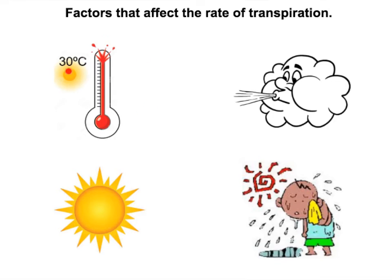Warmer temperatures increase the kinetic energy, so water molecules move out of the leaf faster. A windier environment — higher wind speed — blows humid air away from the bottom of the leaf, increasing the water potential gradient and therefore increasing the rate of transpiration. If there's a higher light intensity, plants detect the light and more stomata open, allowing more water to evaporate from the leaf.